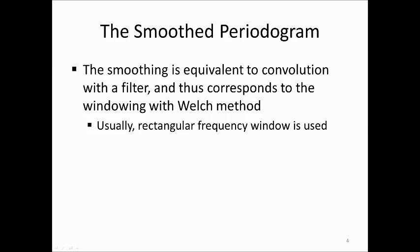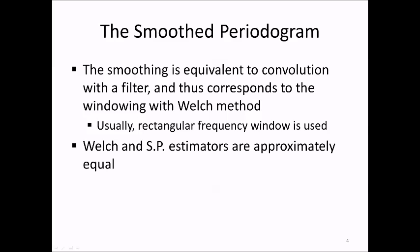In the smoothed periodogram method, we usually use a rectangular window in the frequency domain, as this has turned out to produce a good spectral density estimate. Other windows could of course be used, but there is little to gain from doing that. As stated in the book, the Welch method and the smoothed periodogram method both result in very similar spectral density estimates.